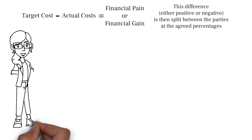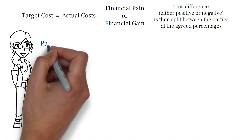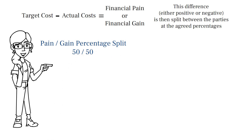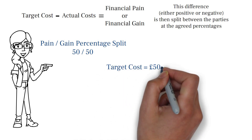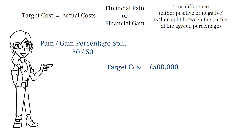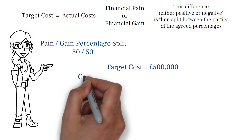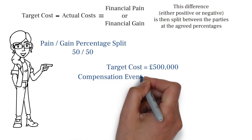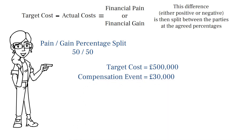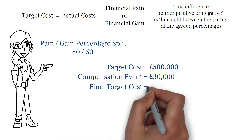Let us work through a practical example together. For this example, we are going to assume that the percentage split between the client and contractor for any financial pain or gain is 50-50. We are going to imagine that a construction project has been tendered for and the target cost has been agreed at £500,000. During construction, it was found that the ground conditions were not as stated in the design documents and concrete was discovered. The additional cost incurred to remove the concrete and make the ground good was £30,000, and this was submitted for and agreed through a compensation event, raising the target cost to £530,000.